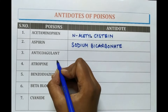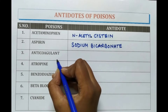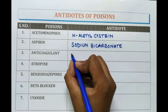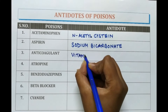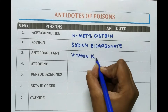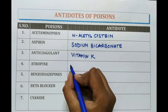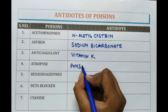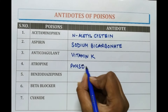When an anticoagulant is given in a large dose, then to avoid its poisoning, vitamin K is given as the antidote. For Atropine, Physostigmine is provided.